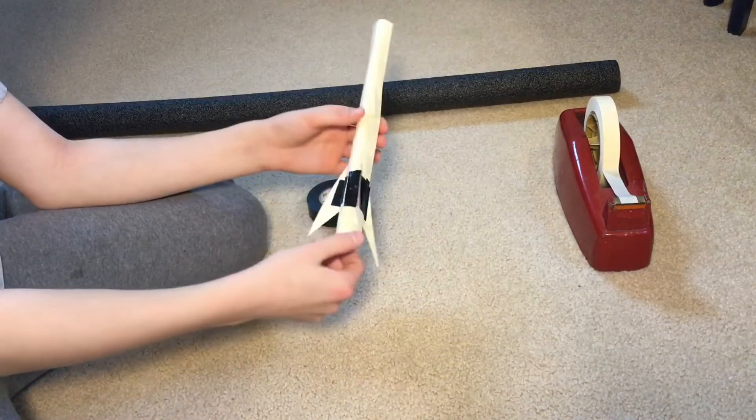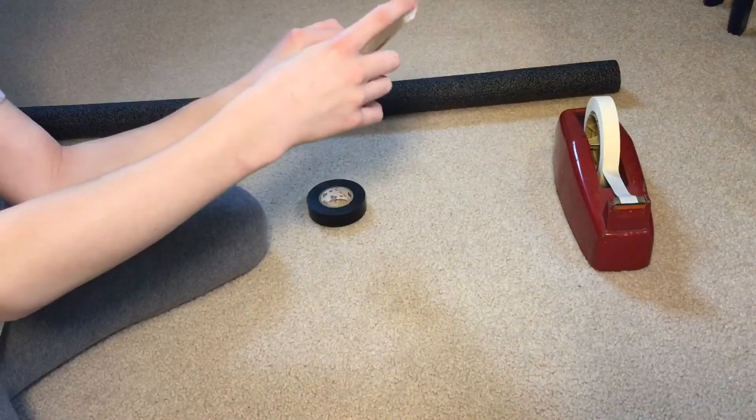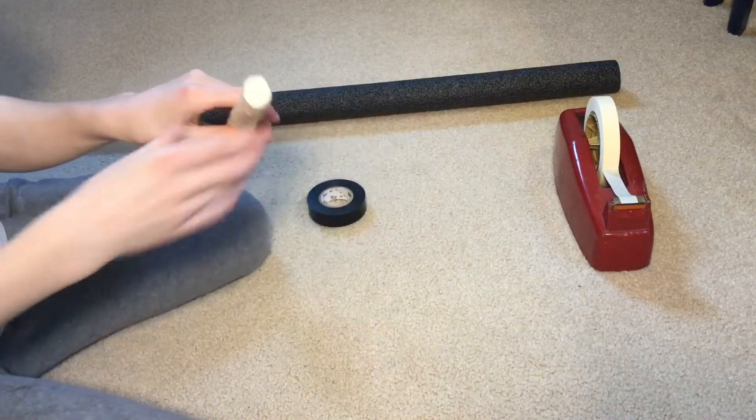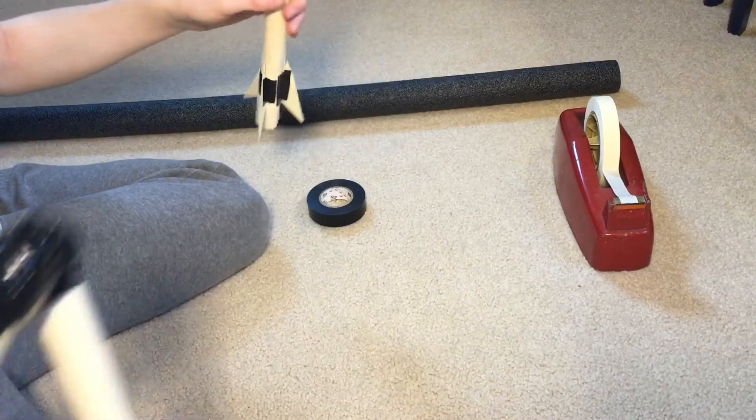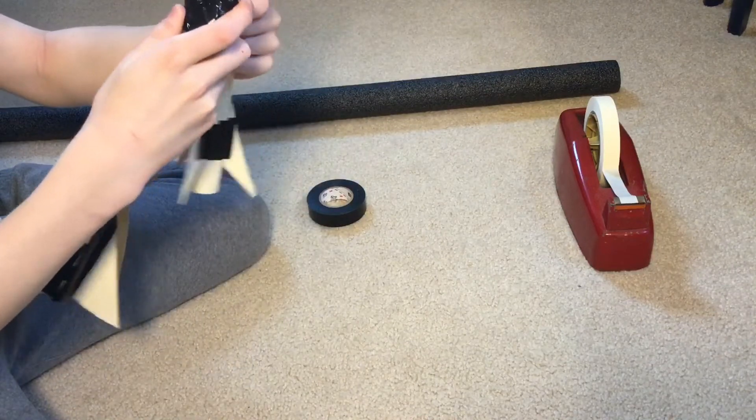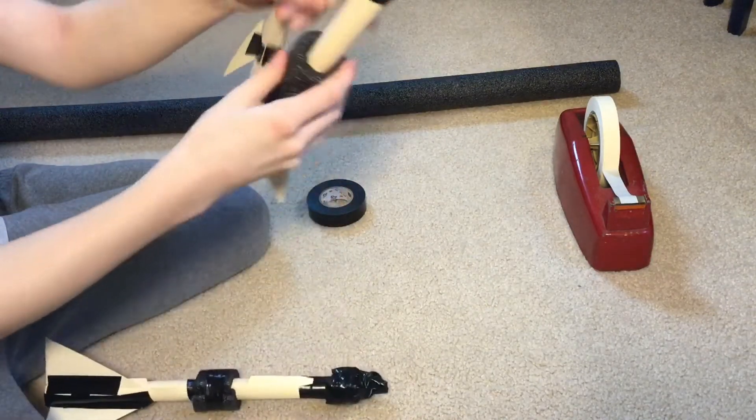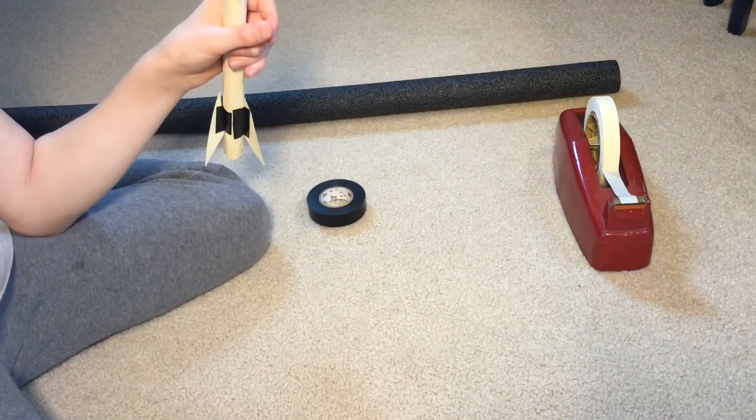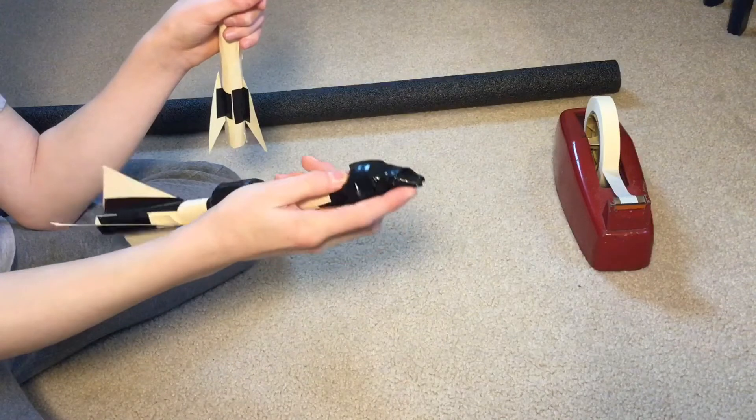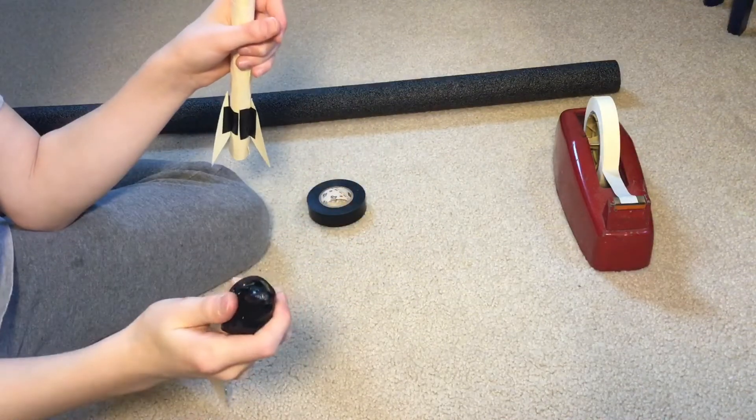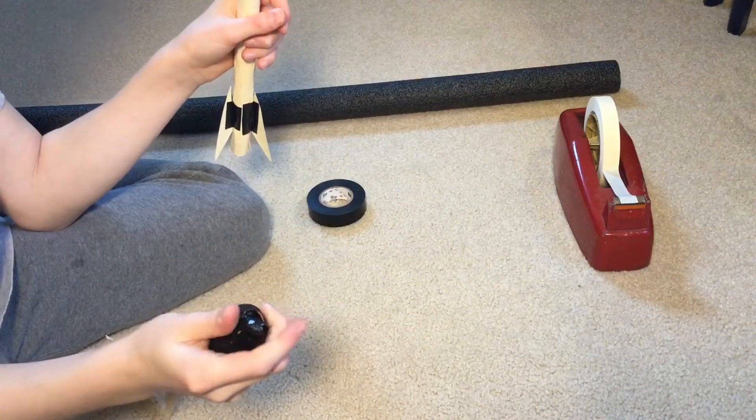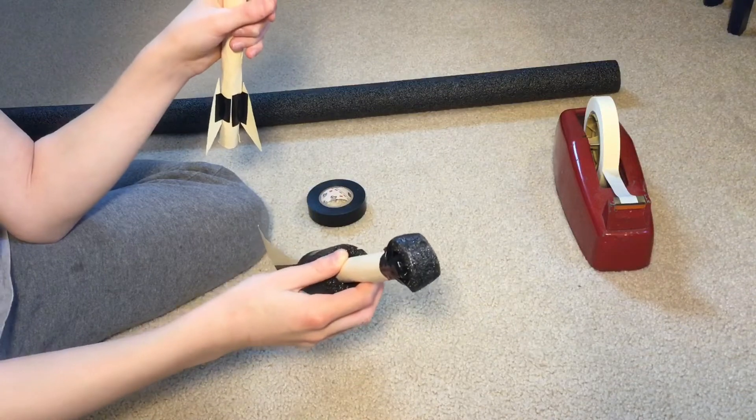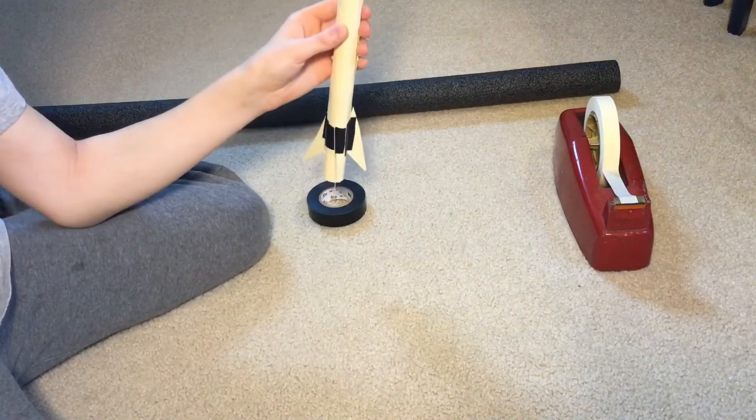So we've got all of the fins attached. Now you're going to want to choose something to put on the top. You can choose putting a pointed cone or a round one. This is what a round one will look like. And this is what a pointed one will look like. The pointed ones, they're heavier because you have a lot more masking tape on them, but they are more aerodynamic. The rounded ones, they're lighter, but they're less aerodynamic. So you have to choose which one do you want.